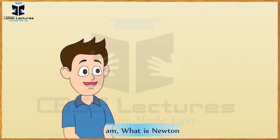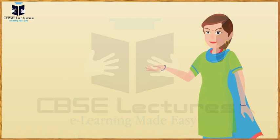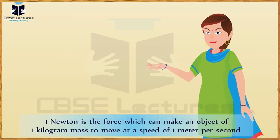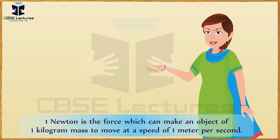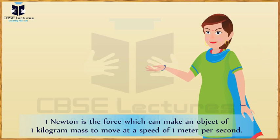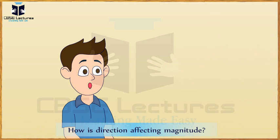Ma'am, what is Newton? Newton is named after Sir Isaac Newton. Newton is the force which can make an object of 1 kilogram mass to move at a speed of 1 meter per second. How does direction affect magnitude?